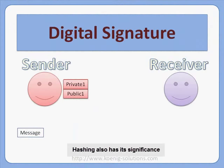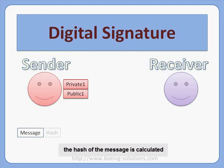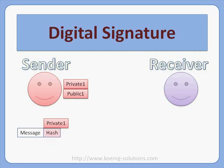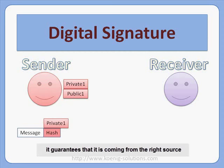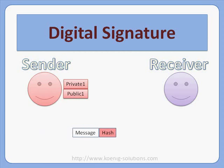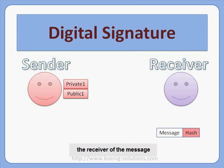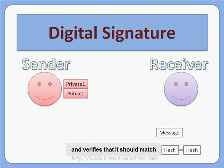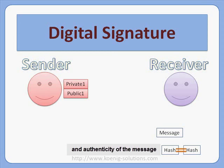Hashing also has significance in digital signing. In digital signatures, the hash of the message is calculated and encrypted with the private key of the sender. As the private key is unique and not shared with anybody, it guarantees the message is coming from the right source. On the receiving end, the receiver obtains the sender's public key to decrypt the hash, also calculates a fresh hash from the message, and verifies that they match. This way, both integrity and authenticity of the message are verified.